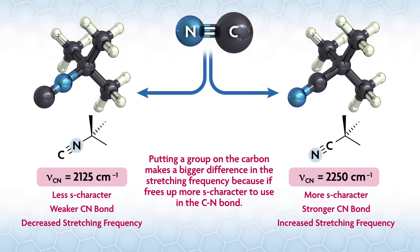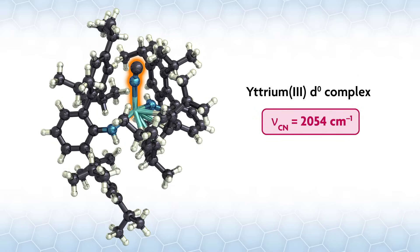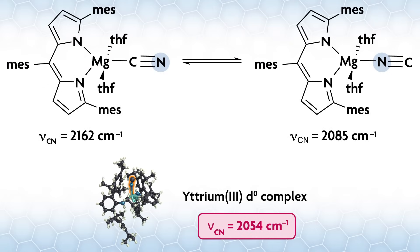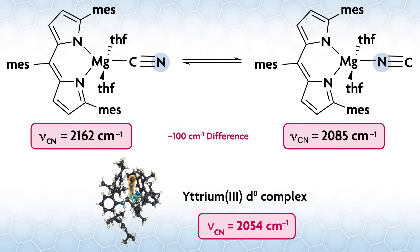The same should be true if you put a metal that can't backbond on cyanide instead of tert-butyl. If the metal is on the carbon, the stretching frequency should be about 100 wavenumbers higher than if on the nitrogen. Our CN stretch in our isocyanide complex comes at 2054 reciprocal centimeters. We don't see the other isomer where the carbon is attached instead of nitrogen, so I can't tell you experimentally what that number is. But Harder and co-workers described a magnesium system where they observe the cyanide and isocyanide in equilibrium. As we would expect, their Mg-NC isomer is about 100 reciprocal centimeters lower in frequency than their Mg-CN.